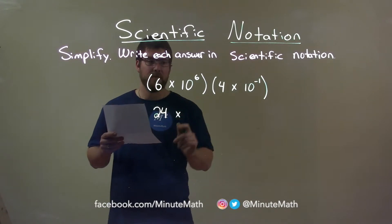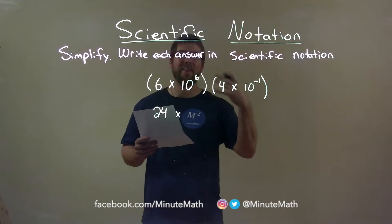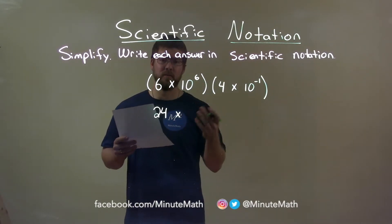Now, the tens. Again, 10 to the sixth times 10 to the negative 1, same base, we add the exponent. 6 plus negative 1 is 5.